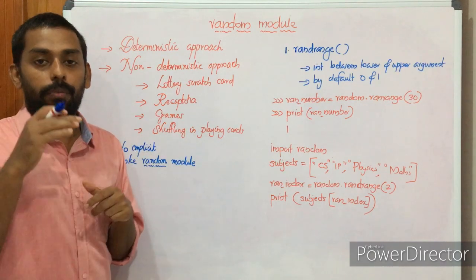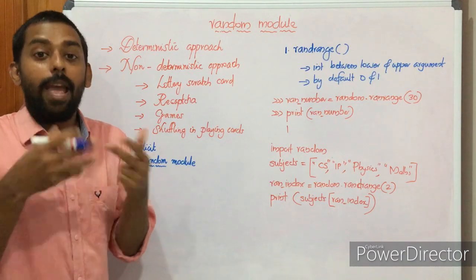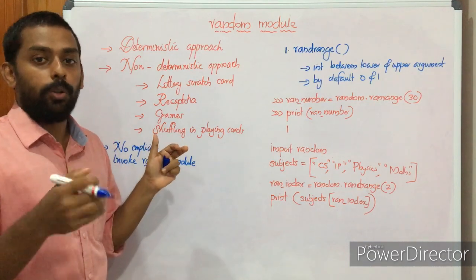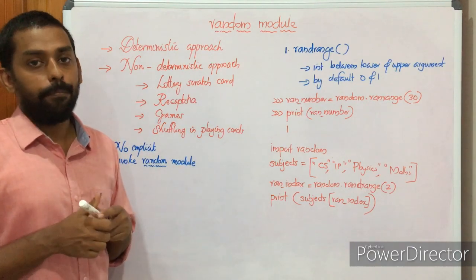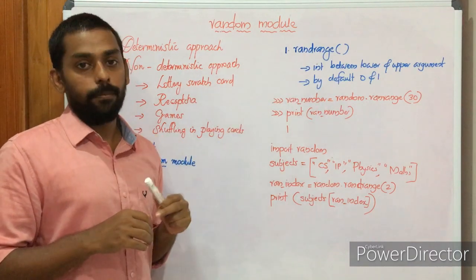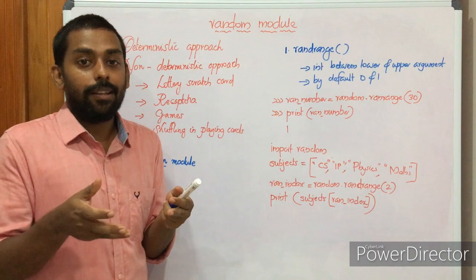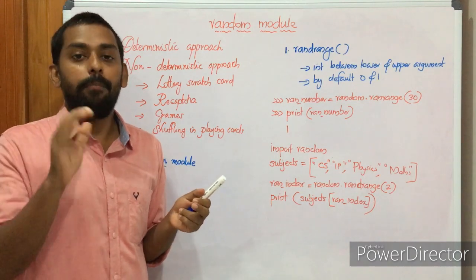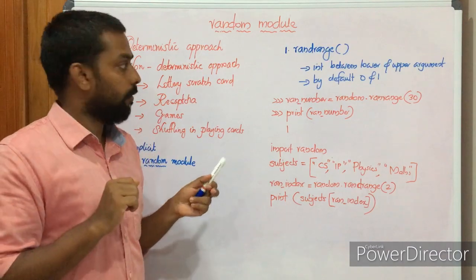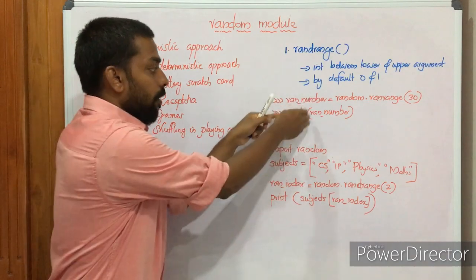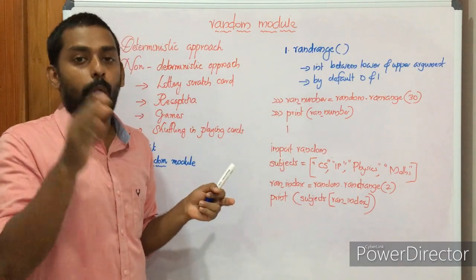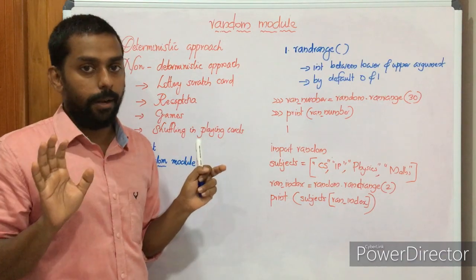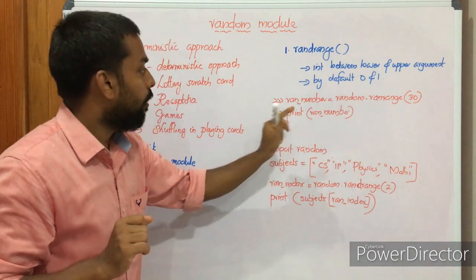In Python, we don't have any implicit mechanism to enable random functions. We have to import the random module to our program in order to run all the random functions available in it. The first function is randrange. It is a function that generates an integer value between a lower argument and upper argument — that is, a lower limit and upper limit. By default the lower limit is 0 and the upper limit is 1.